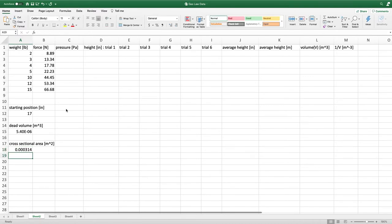We used the same weights as we did for the syringe trials, so that and the force column stay the same. The pressure is going to be the force divided by the pump cross-sectional area. The measurements you recorded for the position of the handle are not actually the heights for the air inside the pump. To record the corresponding heights, you want to input the position of the handle minus the starting position.